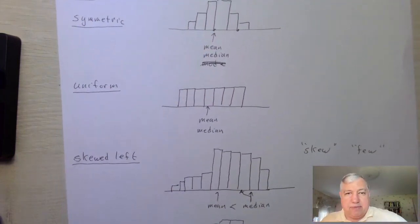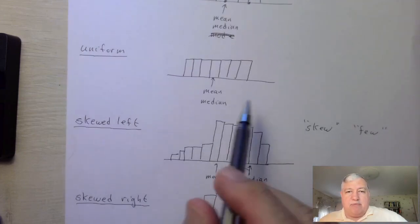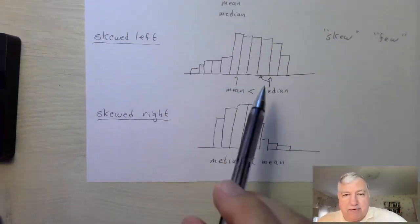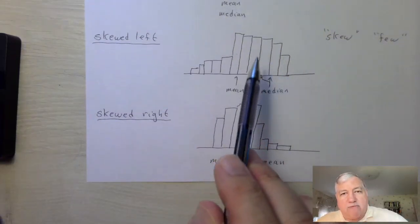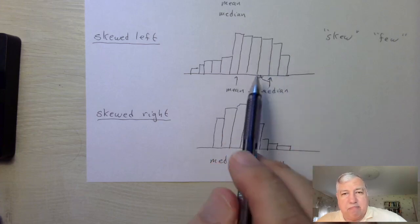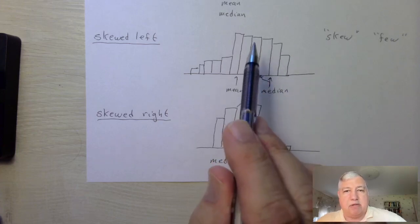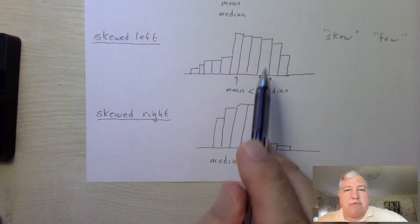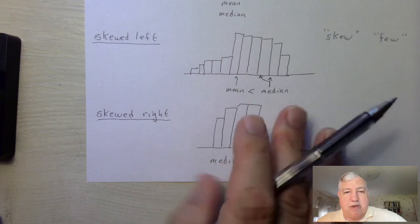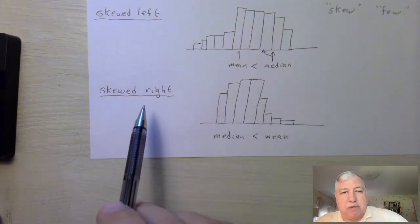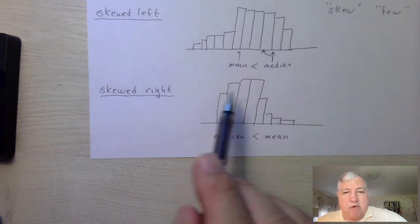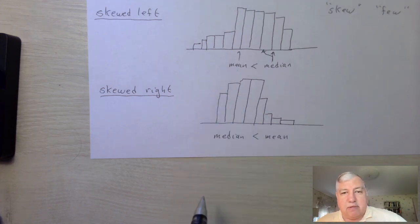When the distribution is symmetric or uniform, the mean and median are very close to each other. With a skewed left distribution, more data values are on the right, so the median is bigger than the mean. When the distribution is skewed right, the mean is bigger than the median because more values are on the left.